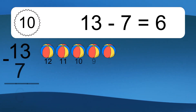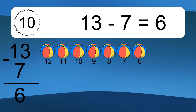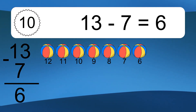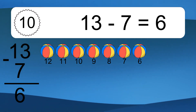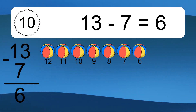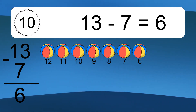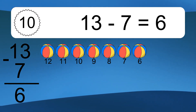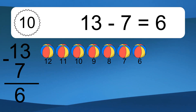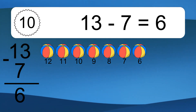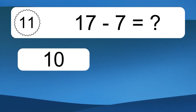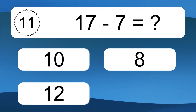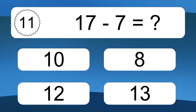13 minus 7 equals what? 13 minus 7 equals 6. Let's count it. 12, 11, 10, 9, 8, 7, 6.